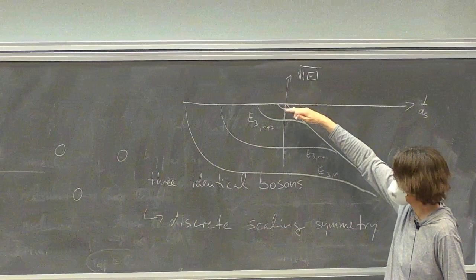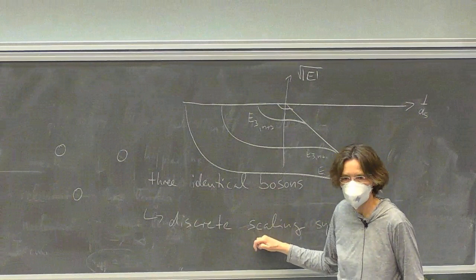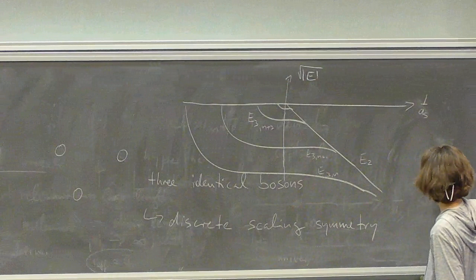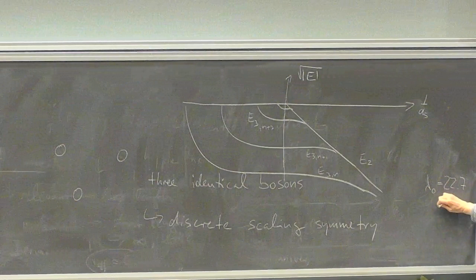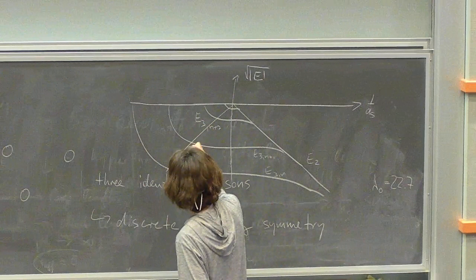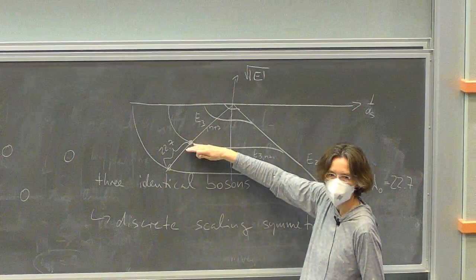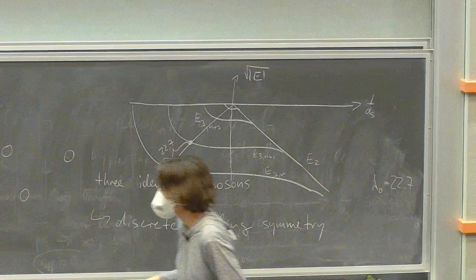There's an infinite tower of three-body states, and no longer an arbitrary scaling factor — instead a discrete scaling factor of about 22.7, already calculated by Efimov in 1971. This parameter tells us how far apart the energy levels are separated in this scale. If we have an energy level here, we know there are the same energy curves separated by this discrete factor — discrete scaling as opposed to continuous scaling.